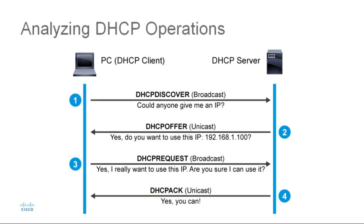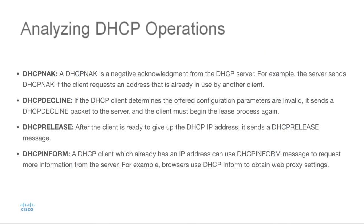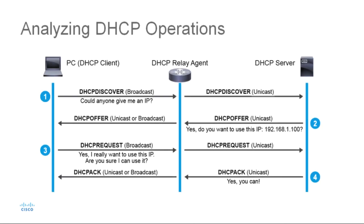This is a simplification of a successful DHCP negotiation. Keep in mind that there are other messages you might see, including the DHCP NAK, which is a negative acknowledgement from the server; the DHCP decline, which is sent from the client due to invalid parameters; the DHCP release, sent by a client that's ready to relinquish its IP address; and the DHCP inform, when a client is requesting more information.